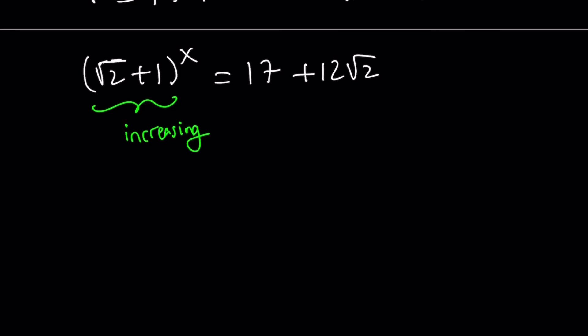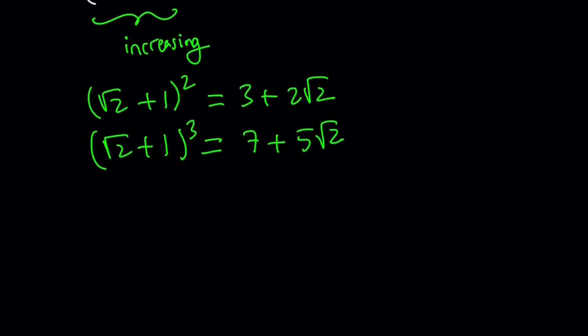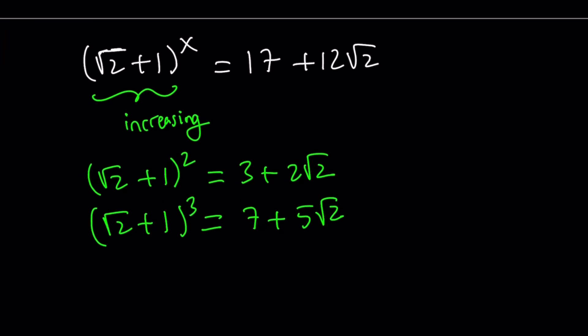So let's go ahead and test some values. So square root of 2 plus 1 squared is going to give us square root of 2 squared, which is 2, 2 plus 1, 3 plus 2 root 2. If you take square root of 2 plus 1 to the third power, you're going to get 7 plus 5 root 2. Let me just go ahead and give it to you. It's very easy. You can just use the formulas. Now notice that as I use higher powers, I'm getting closer to these numbers.